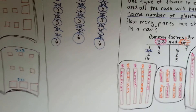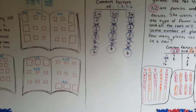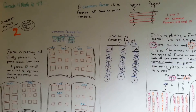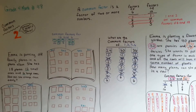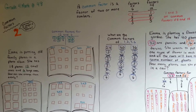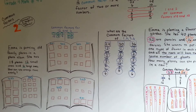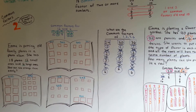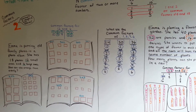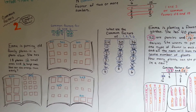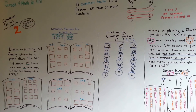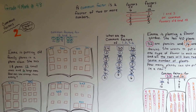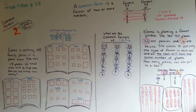That's how common factors can help you when arranging things. It can also help you solve math problems and with division. If you need to know that 24 and 30 have a number in common to divide them, you'd say: 6, 3, 2 — I can divide them by those. We're going to keep talking about division, and I'll see you in the next video. Bye!